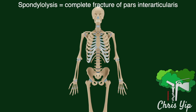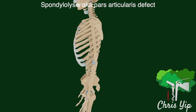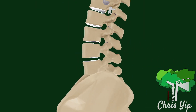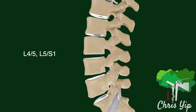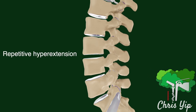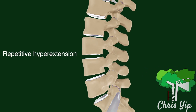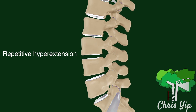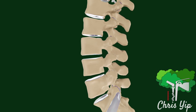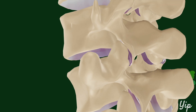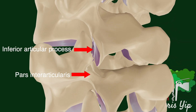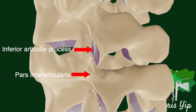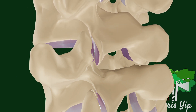Spondylolysis is defined as a complete fracture of the pars interarticularis, also known as a pars interarticularis defect. It is most common at the lower lumbar spine, and the common inciting factor is repetitive hyperextension of the lumbar spine, such as in gymnasts and weightlifters. Repetitive hyperextension can lead to regular contact between the inferior articular process of a vertebra against the pars interarticularis of the adjacent caudal vertebra, resulting in a stress fracture.